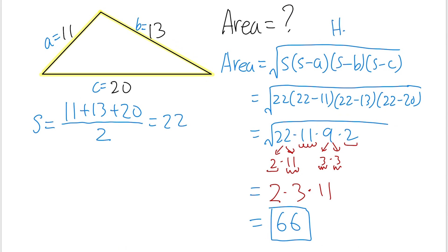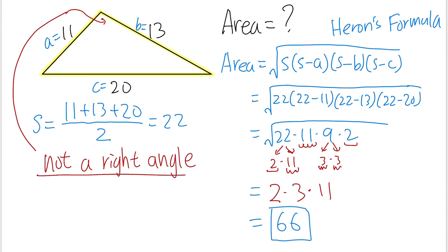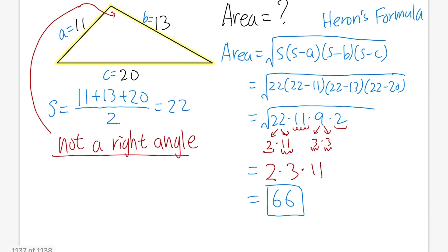Many of you know this is called Heron's Formula. It's extremely useful to find the area when we are given 3 sides. But there are two questions. First: why do we use this? Can we just use one-half base times height? Well, no, because this angle here is not a right angle. Even though it kind of looks like it, if you really look at it, it's not.